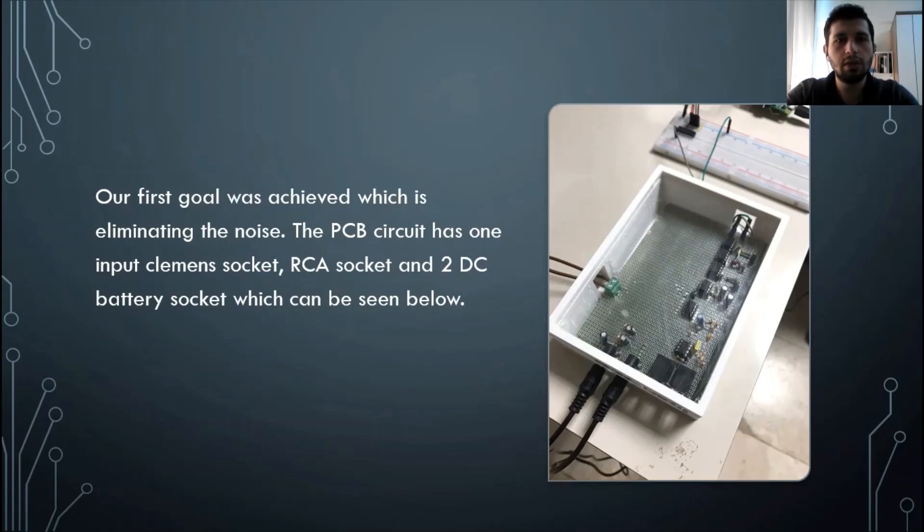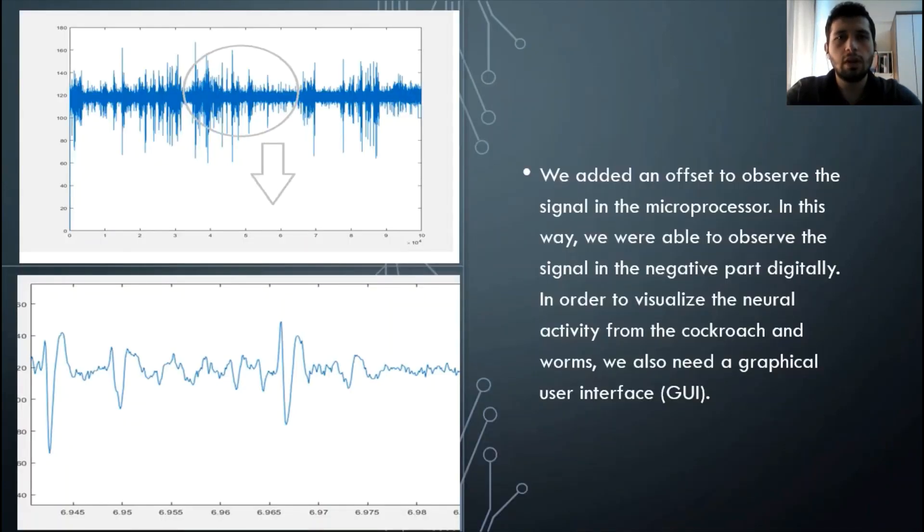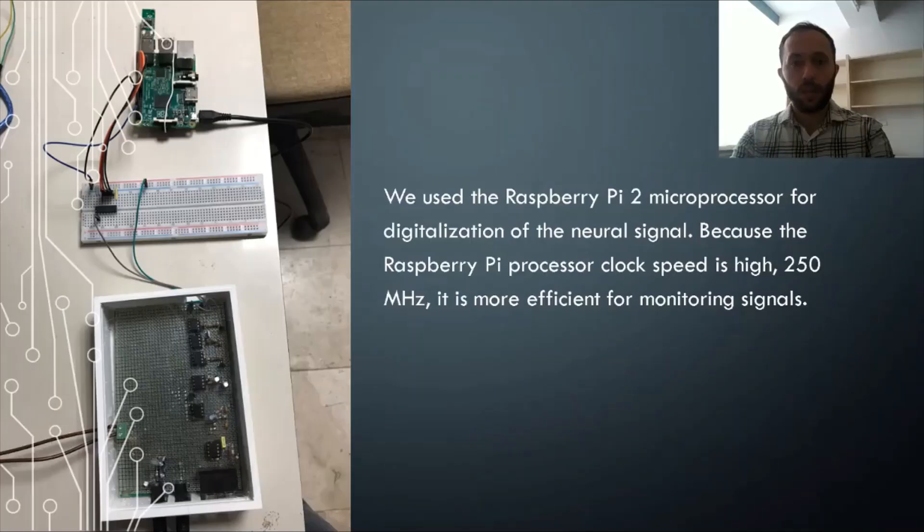We used Altium Designer while designing. As you can see, there are RCA sockets, Clemens sockets, and two DC battery sockets in this circuit. We observed the signal that we received from our circuit in a digital environment through the microprocessor. We designed an interface to see these signals in the computer. We used MATLAB for the interface. With MATLAB, our signals in the output were clearly observed.